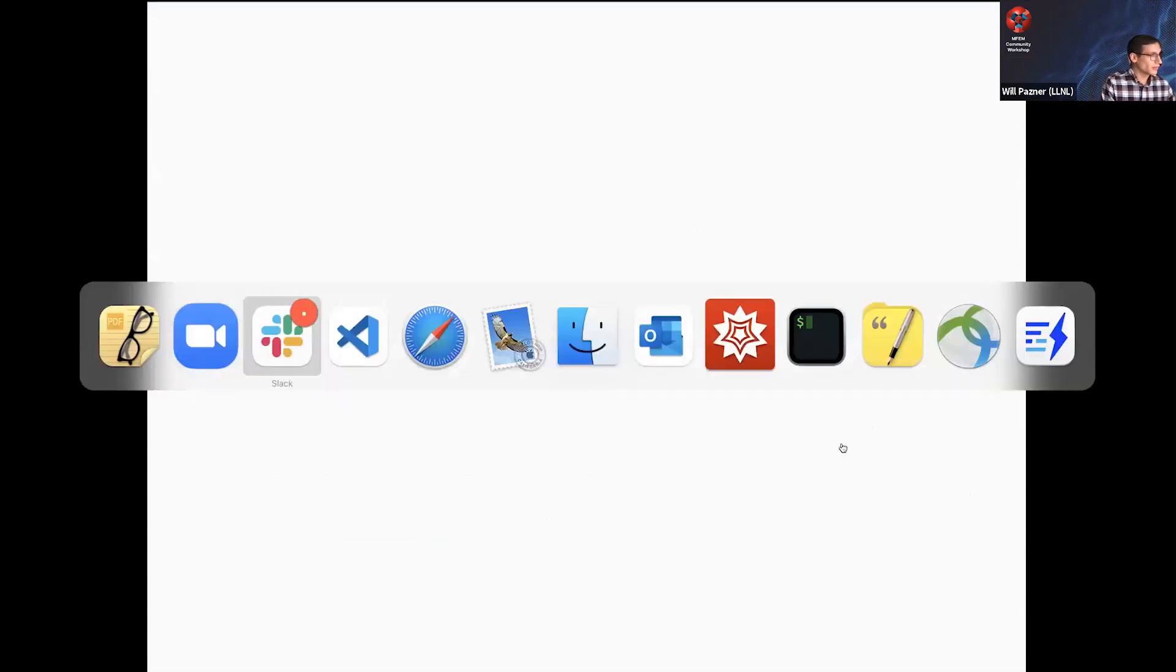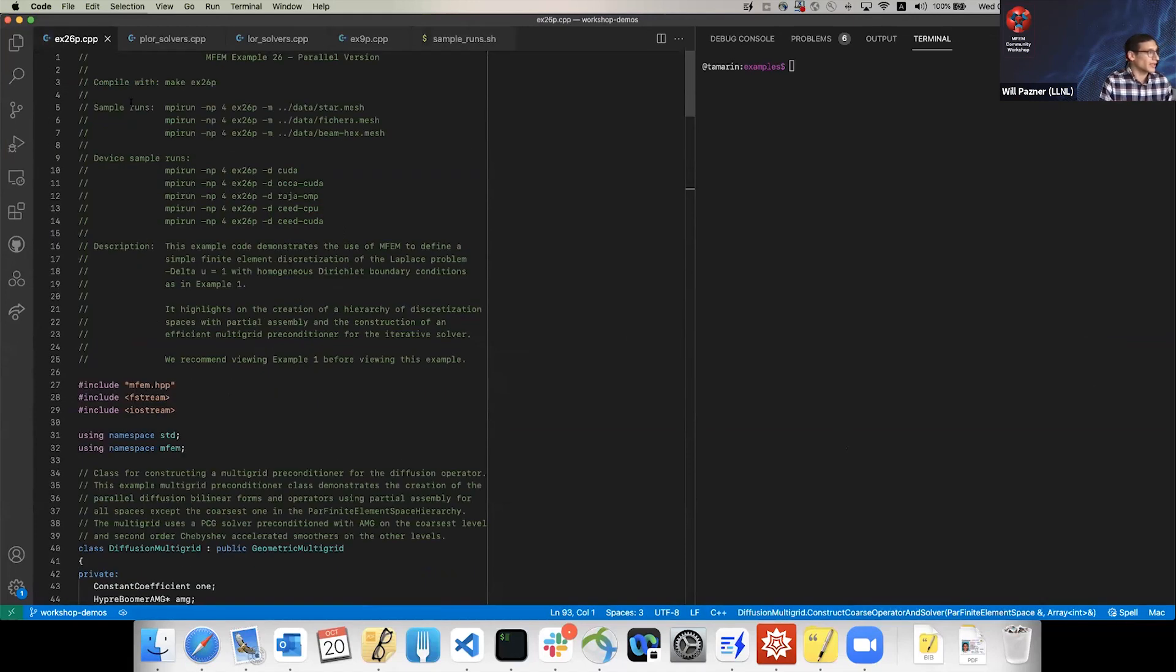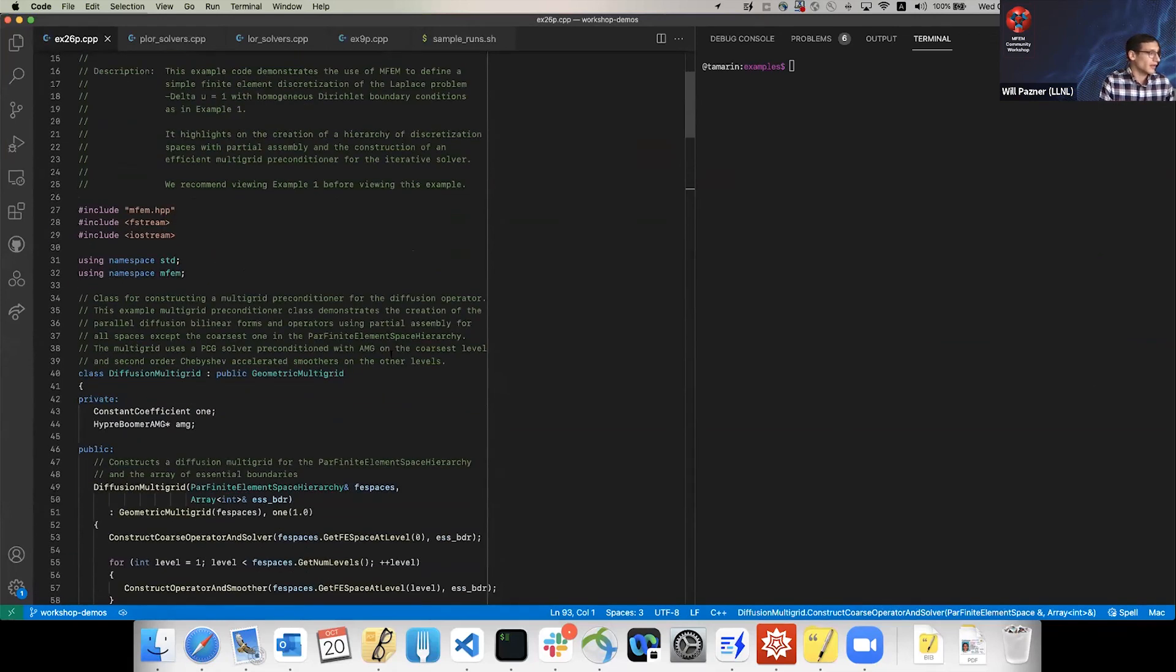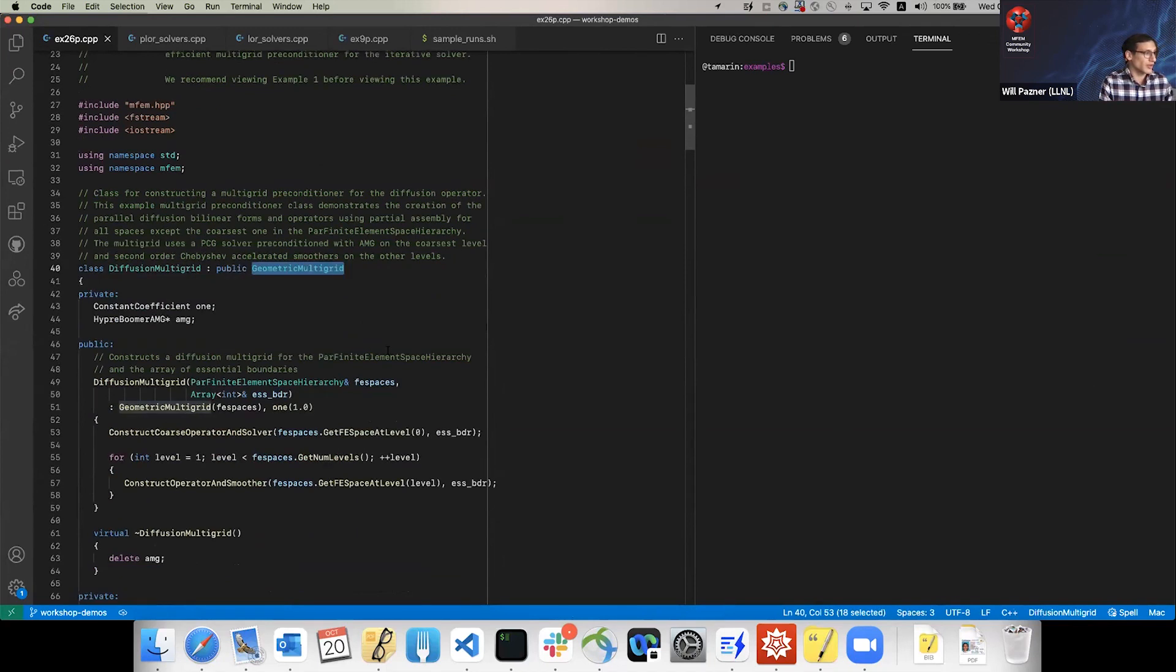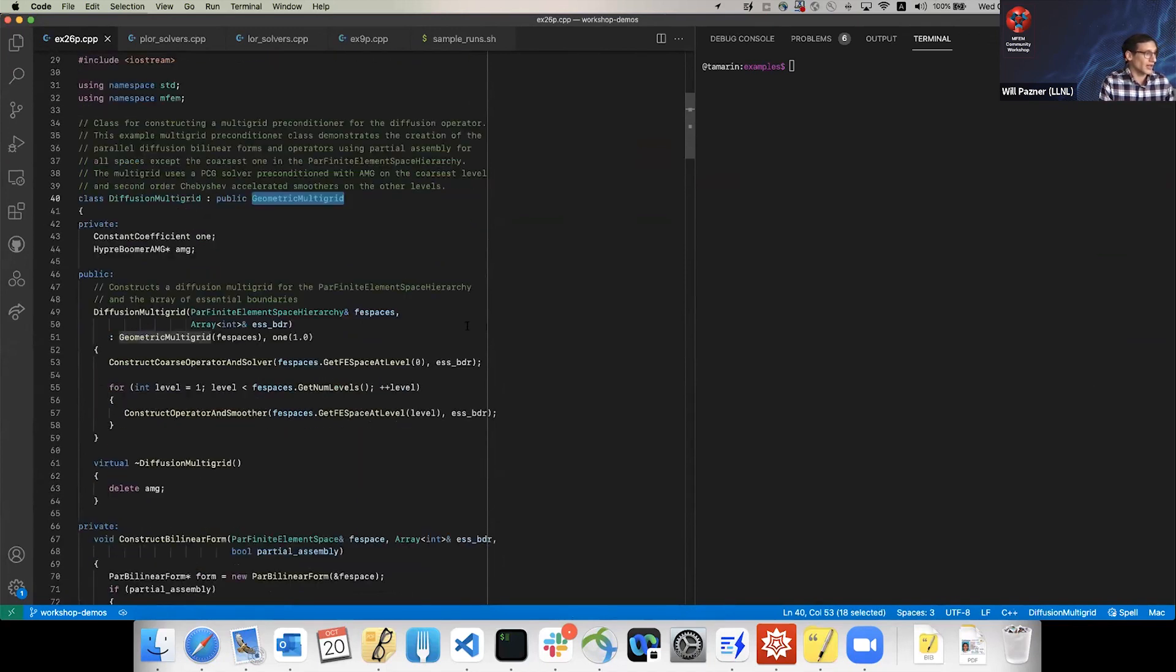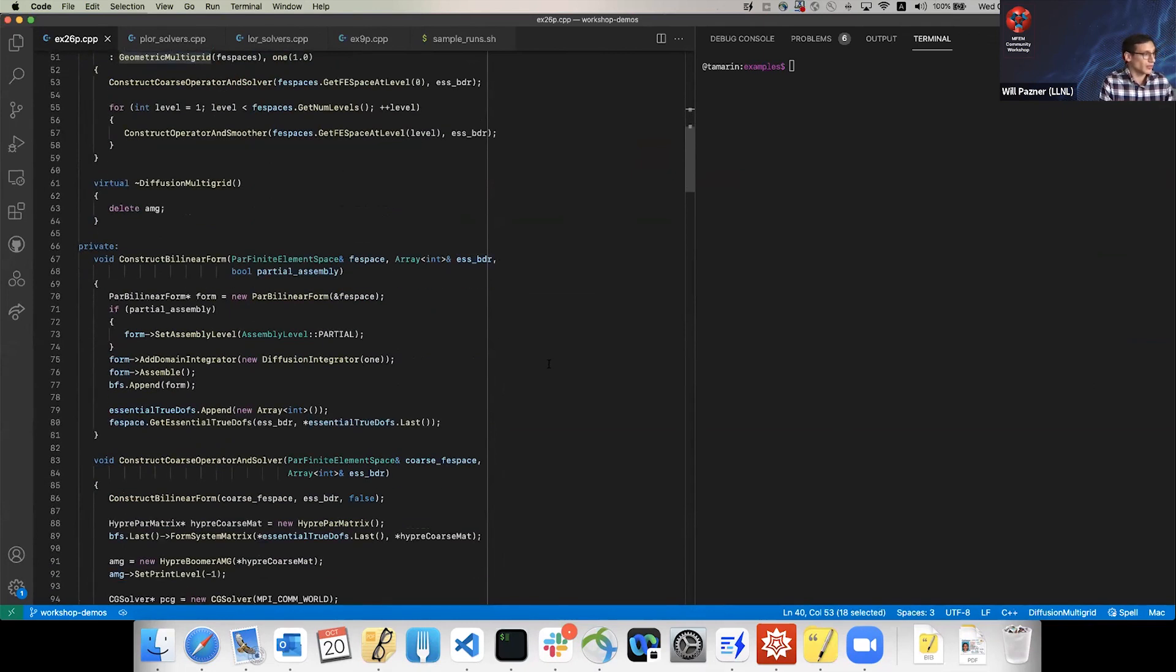I'll briefly illustrate this example - it's Example 26, here Example 26p, the parallel version. It comes with MFEM. If you look at the code, the first class is called DiffusionMultigrid. You inherit from GeometricMultigrid and then construct. Basically at every level, you have to tell it what operator you want to construct and what smoother you want. At the coarsest level, you create a coarse solver.